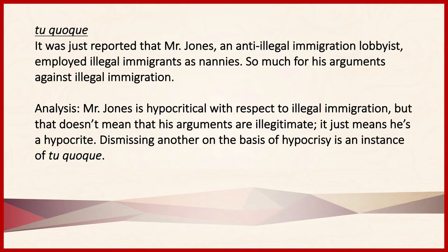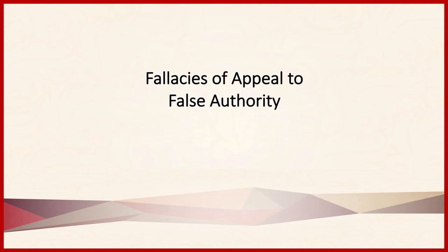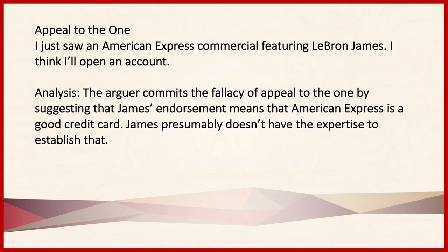The second category of fallacies of relevance is fallacies of appeal to false authority. What ties all of these fallacies together is that someone is appealing to somebody else or a group of other people in order to justify his or her own beliefs. The most basic form of this is an appeal to the one. To identify this fallacy, what we're looking for is somebody who is appealing to somebody else's opinions when in fact that other person really doesn't have any sort of real authority on the issue.